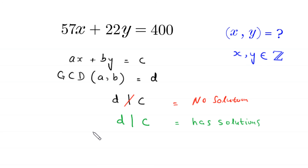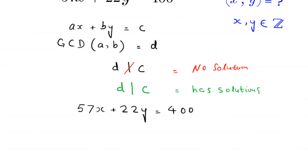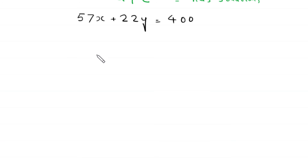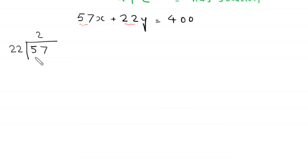To find a particular solution, we use Euclid's algorithm for finding the GCD. So we rewrite the equation: 57 times x plus 22 times y is equal to 400. We find the greatest common divisor of 57 and 22. According to Euclid's algorithm, we divide the greater number 57 by the smaller number 22: 57 divided by 22 gives quotient 2, since 22 times 2 is 44, and we get remainder 13. Here a=57, b=22, quotient q=2, and remainder r=13.